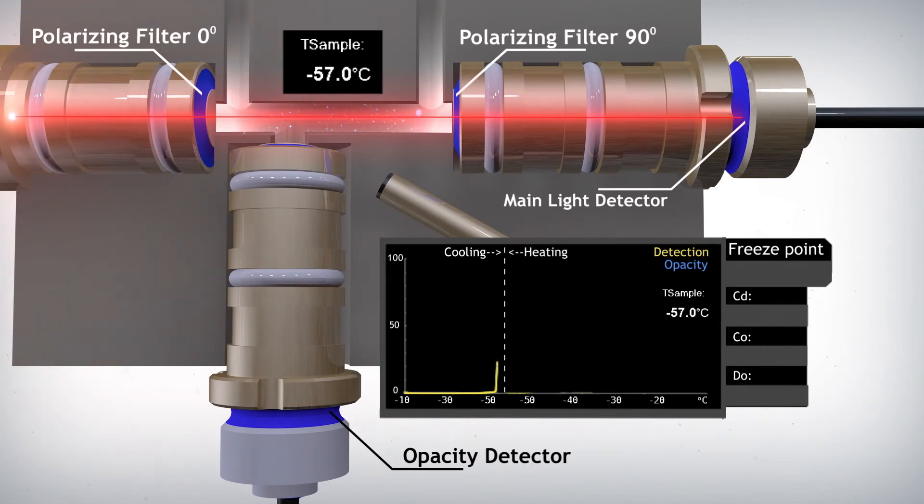Jet fuel hydrocarbon crystals are anisotropic crystals, which means the polarized light from the laser will be scattered in all directions and will allow light into the main detector, resulting in a signal which is recorded on the graph. As the crystals grow larger, the scattered light is strong enough to elicit a signal on the opacity detector.